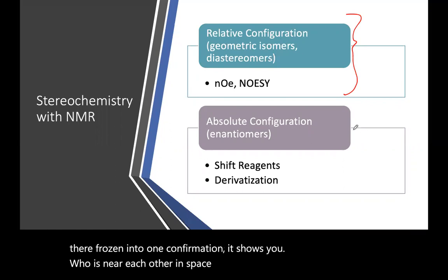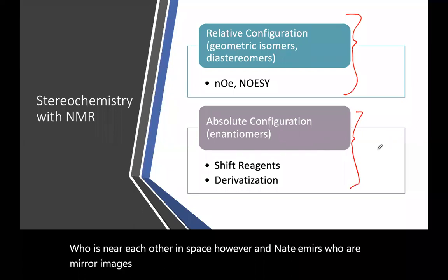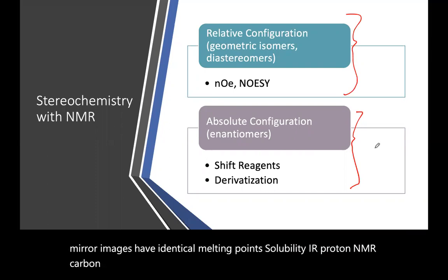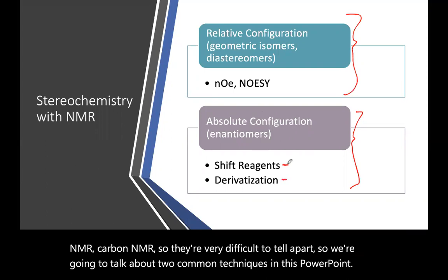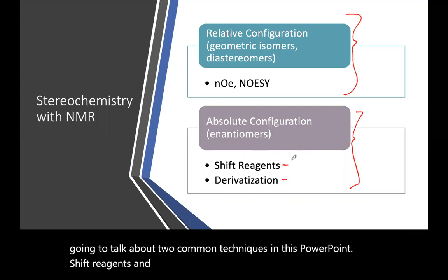However, enantiomers, who are mirror images, have identical melting points, solubility, IR, proton NMR, carbon NMR, so they're very difficult to tell apart. So we're going to talk about two common techniques in this PowerPoint: shift reagents and derivatization that can be used to learn more about the stereoisomer that you have.